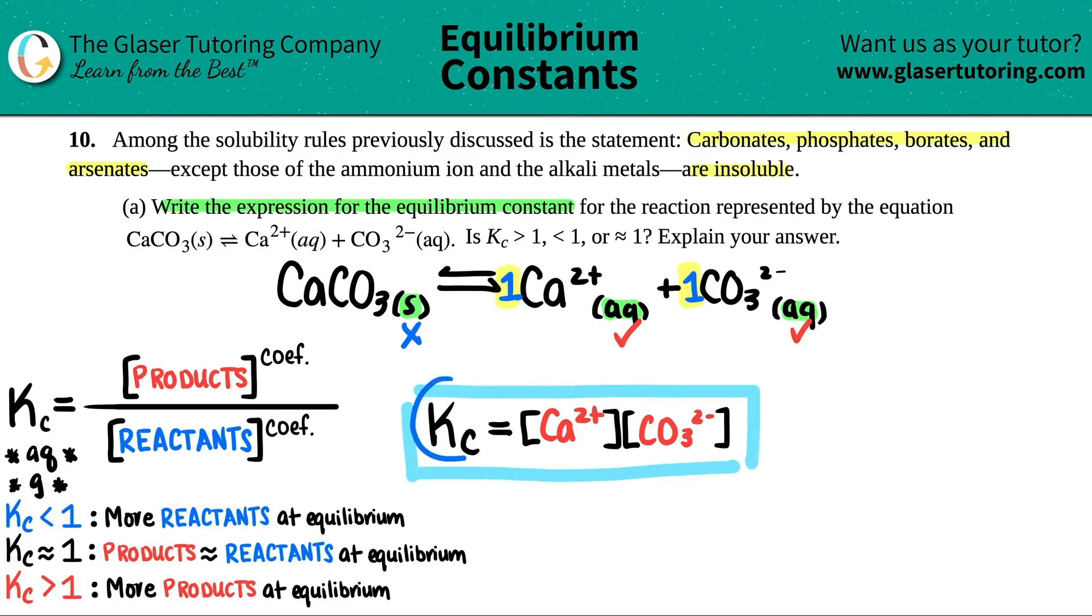Now, is this Kc greater than one, less than one, or equal to one? Well, it comes, the answer comes with what's going on here. In this case, I have CaCO3, which is a solid. And they did say that carbonates, that's what I have here. I have a carbonate. They're all insoluble, means that it's a solid, unless it's with ammonium or alkali metals.